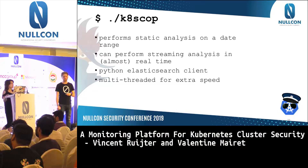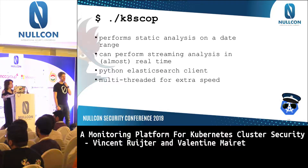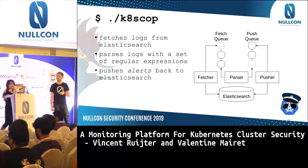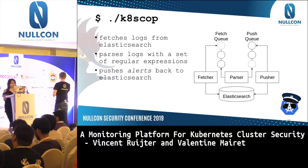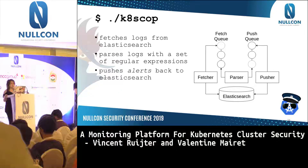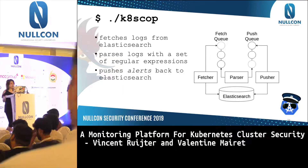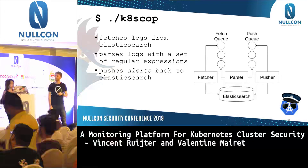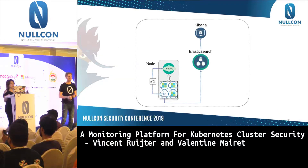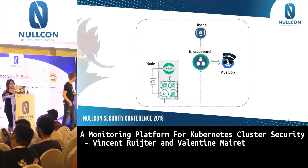There's a slight delay for logs to arrive in Elasticsearch, so we make the program wait a little bit to ensure all generated logs are fetched. KScope uses the Python Elasticsearch client and is multi-threaded for speed. It has three components: the fetcher, the parser, and the pusher, using synchronized queues. It fetches logs from Elasticsearch, parses them with a set of regular expressions, and pushes labeled alerts back to Elasticsearch with information about each event.